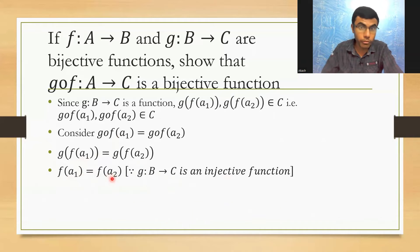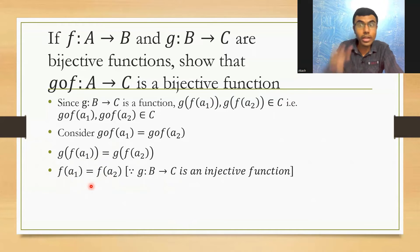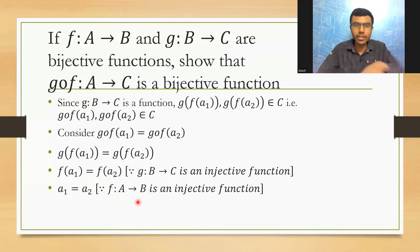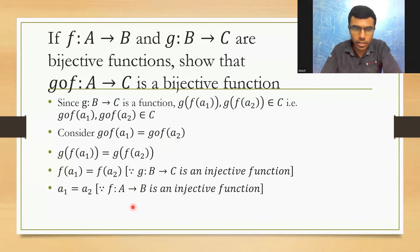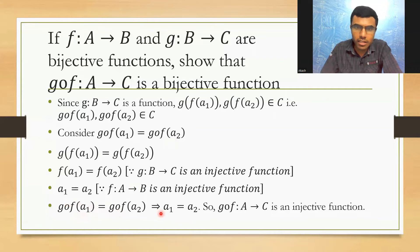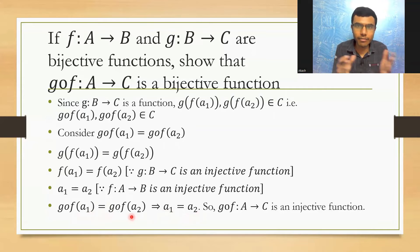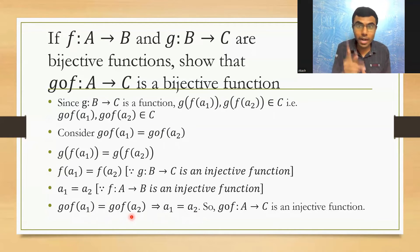Now, if f(a1) = f(a2), again the images are the same, so a1 and a2 also have to be the same — because f:A→B is an injective function. So starting from g∘f(a1) = g∘f(a2), I obtained a1 = a2. Hence, this means that g∘f:A→C is an injective function. We are done with part one.